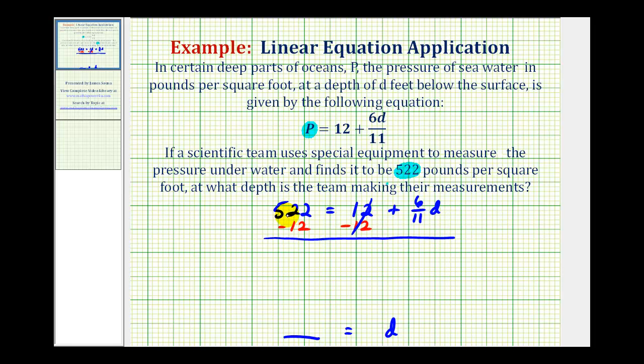This would be zero, so we'd have 522 minus 12 is going to be 510. So we have 510 equals 6 11ths d.